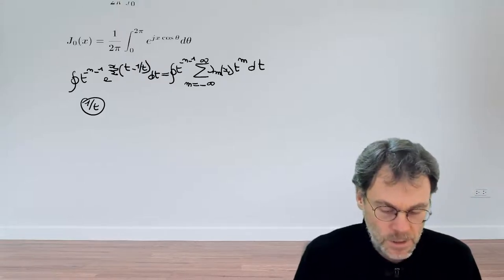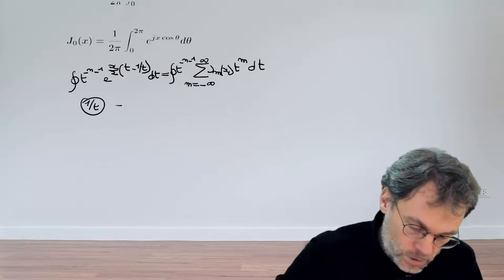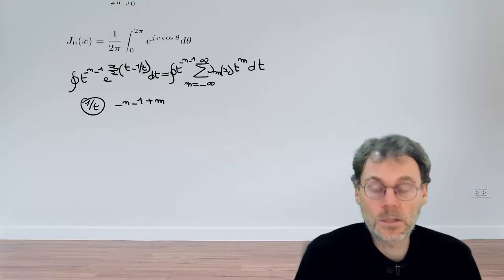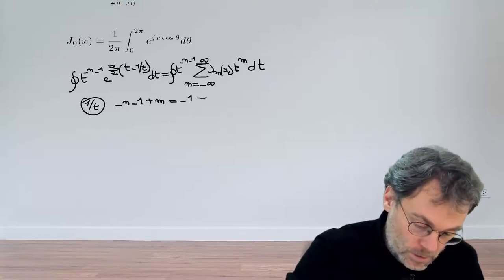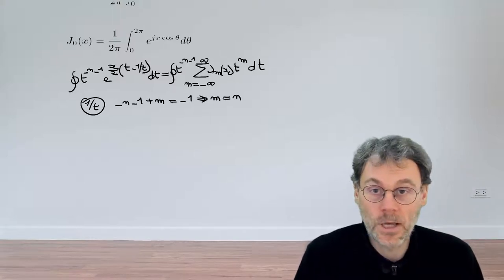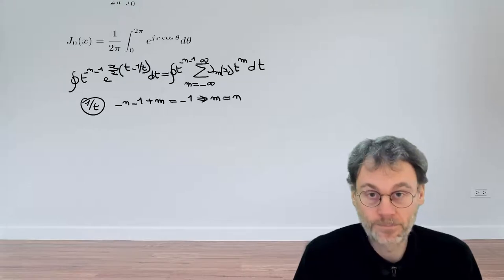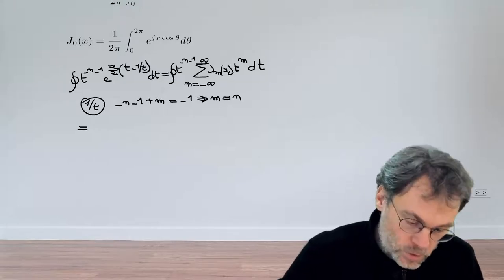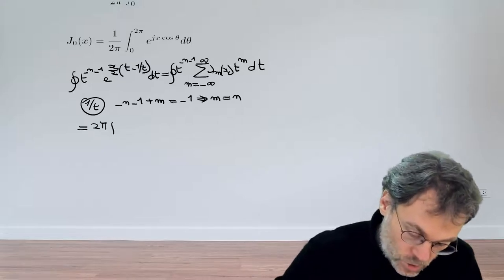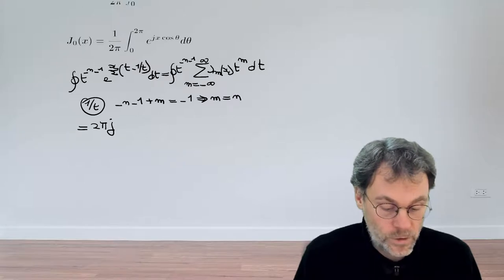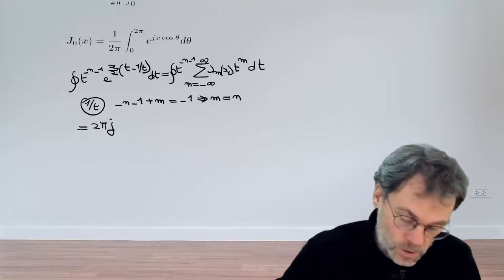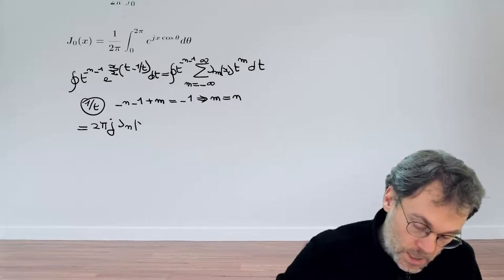So when do we have t to the exponent minus 1? When our exponent minus n minus 1 plus m, in our case, when that exponent is equal to minus 1. So after a calculation, we can derive that that happens when m is actually equal to n. So our integral reduces to that term and gives us 2πj times the coefficient of 1 over t. So this happens when m is equal to n, and the coefficient is j_n of x.